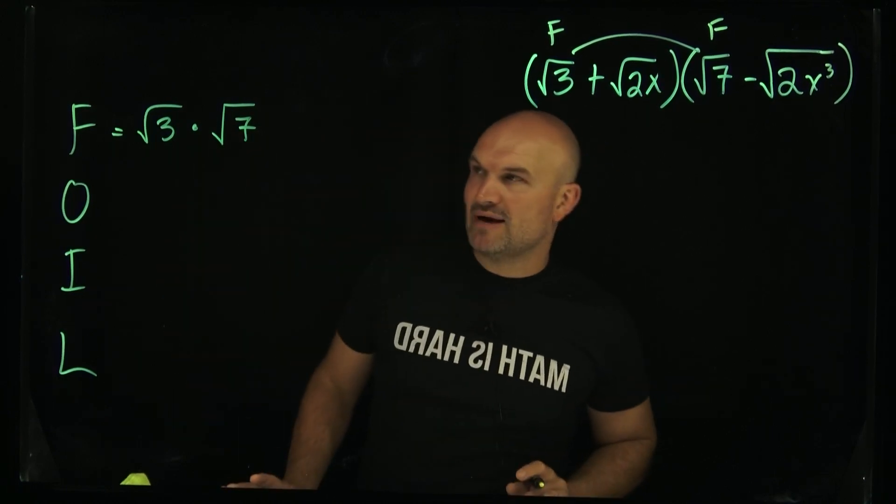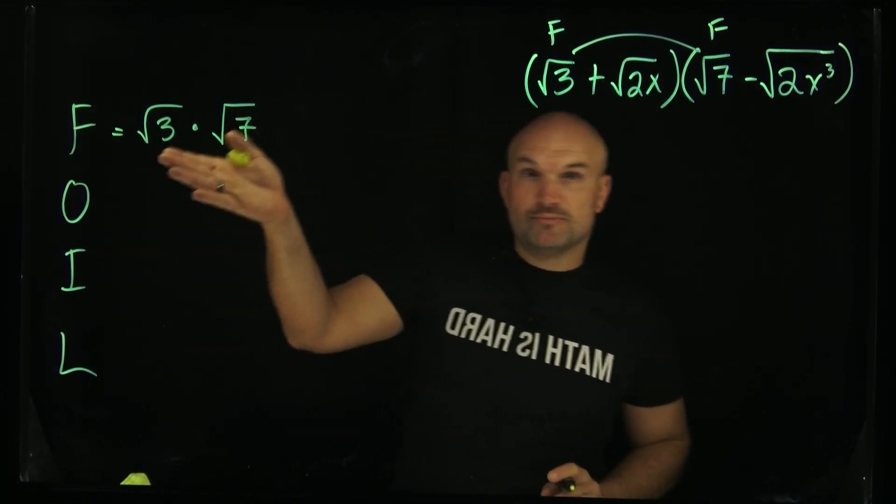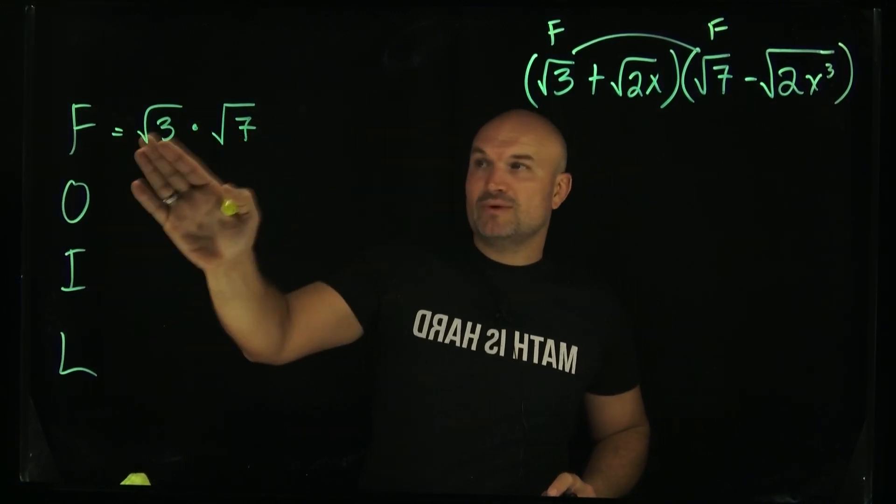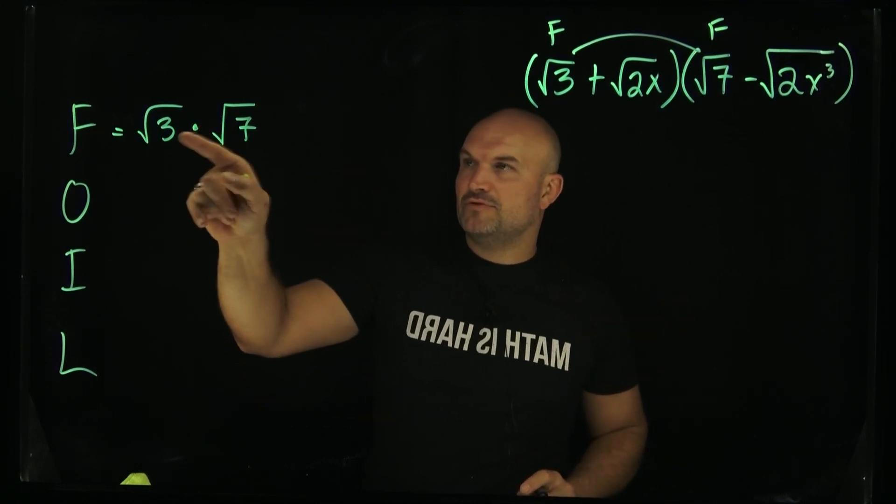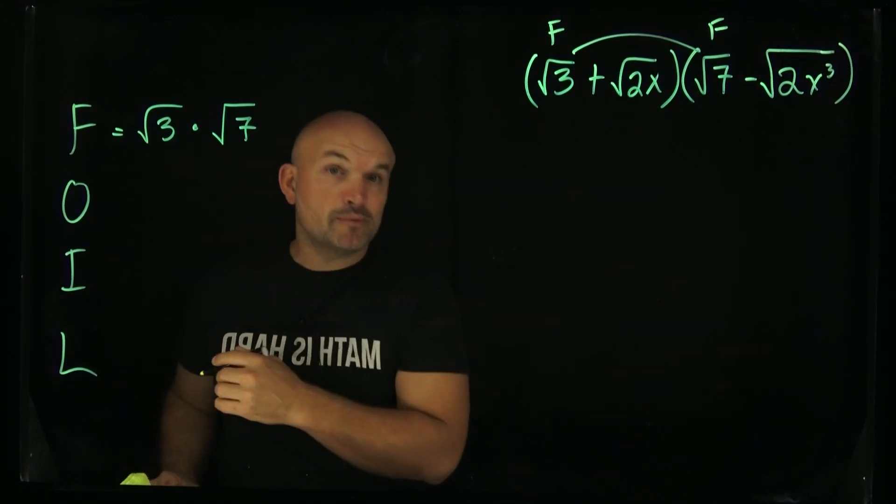Just remember when you're multiplying radicals, as long as they have the same index, meaning they're both square roots, then you just multiply the radicands, whatever is under your radical. In this case, we have 3 times 7, which equals square root of 21.